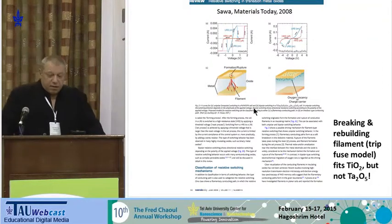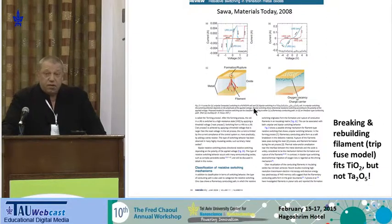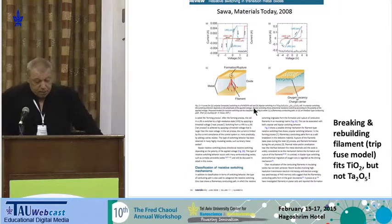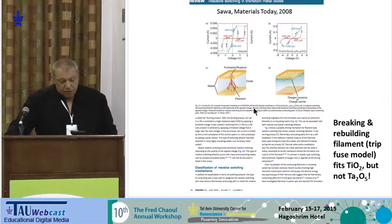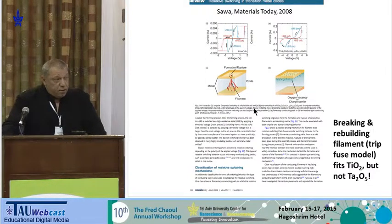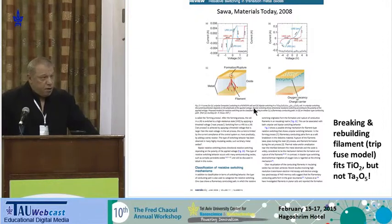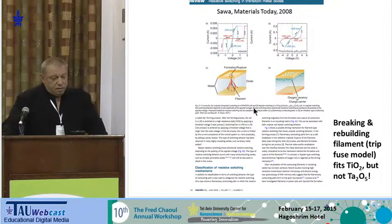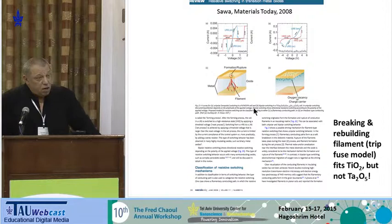How does this insulating oxide layer begin to conduct when you apply bias? People realized it's not that the entire active layer begins to conduct, but rather some conducting channels form that short the top and bottom electrodes — those are responsible for conduction. When we reverse the polarity, we break that filament and get the high resistance state. Switch polarity back and we rebuild the channel — low resistance state. So we have set and reset operations. I will focus on bipolar operation, meaning that to switch from on to off, you need to change the polarity, not just the magnitude of the bias.